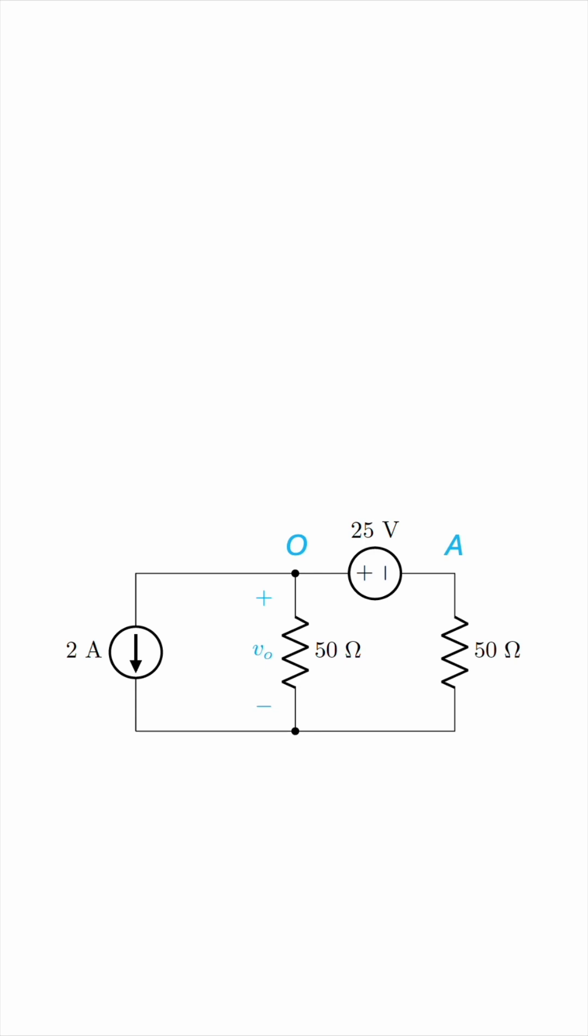So let's write the KCL equation at node O. We have current in equals current out. Now what currents are entering and leaving this node? There is this current leaving node O, and we know it must be equal to 2 amperes because there is a current source over there with that current rating. So we have 2 amps over here.